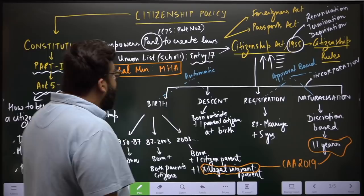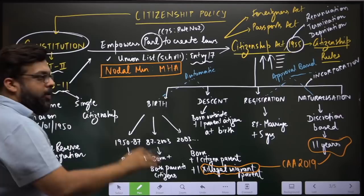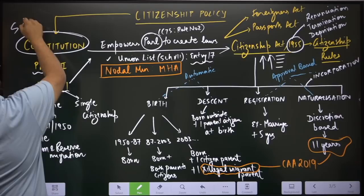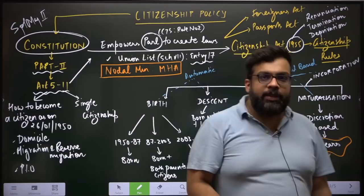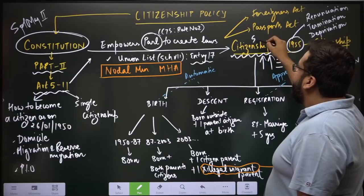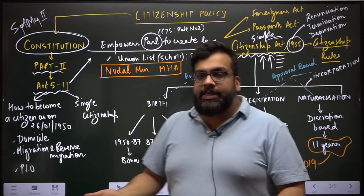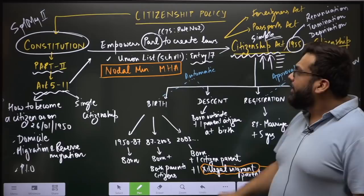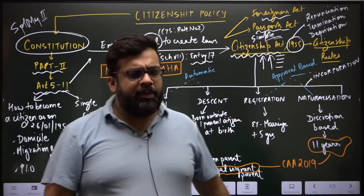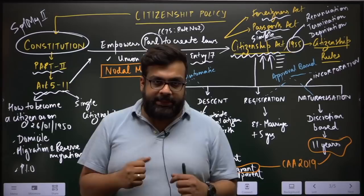The Citizenship Act of 1955 has been amended multiple times — in 1987, 2003, and most recently in 2019. The CAA 2019, the Citizenship Amendment Act, is basically an amendment to the Citizenship Act of 1955, changing certain provisions. Constitutional provisions on citizenship would require a special majority to change, whereas the Act only requires a simple majority. Parliament can also create delegated legislation in the form of rules, such as the Citizenship Rules notified by the concerned ministry.